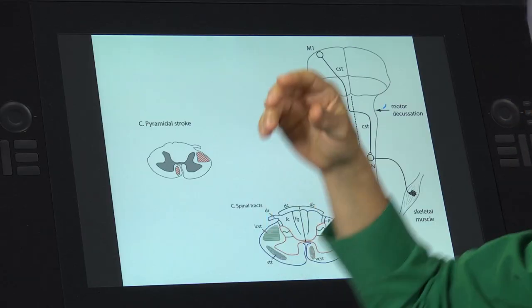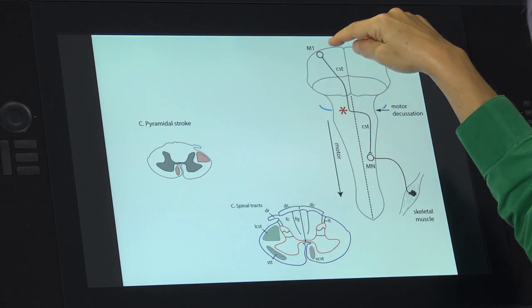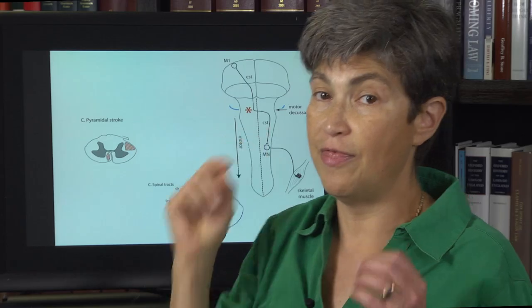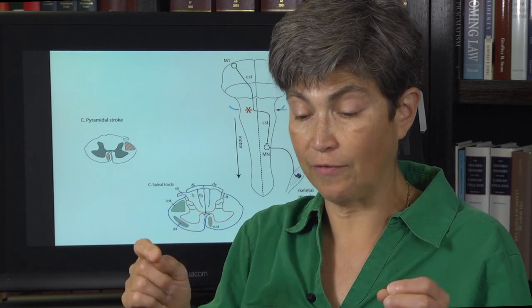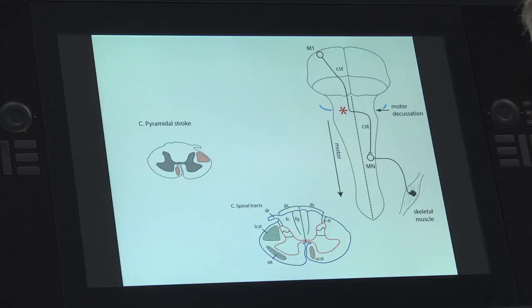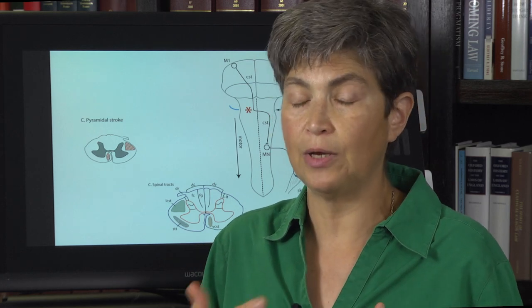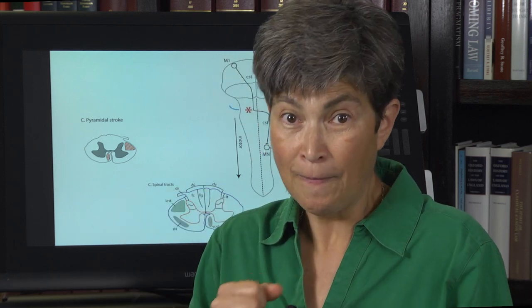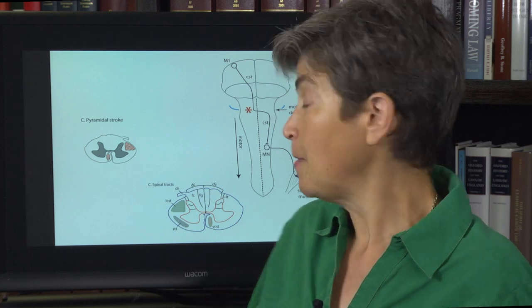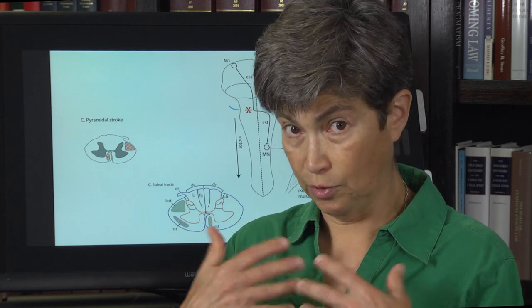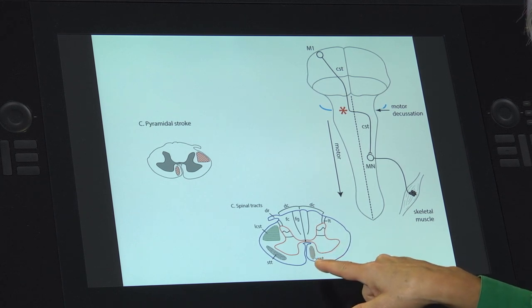10% doesn't cross and travels in the ventral funiculus as the ventral corticospinal tract. The lateral corticospinal tract is responsible for directed voluntary movement — for example, 'Simon says, put your hand on your head.' That ability to direct movement from motor cortex to a motor neuron to a muscle travels in the lateral corticospinal tract. The ventral corticospinal tract carries information about posture.